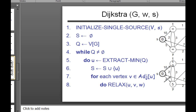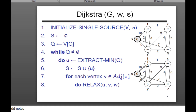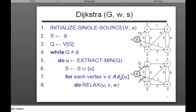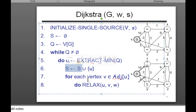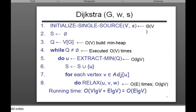For the algorithm: first initialize all vertices to infinity and the source vertex to 0. Insert all vertices into the queue. While the queue is not empty, keep extracting the minimum vertex. We use a disjoint set data structure. For each vertex adjacent to that minimum, keep relaxing the edges. That's the Dijkstra algorithm.